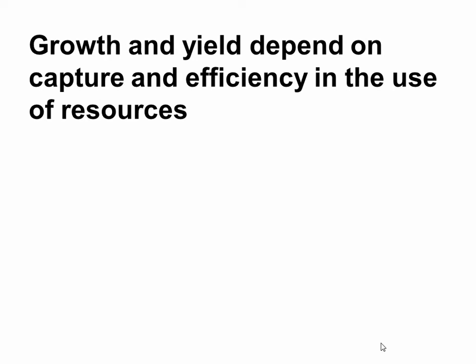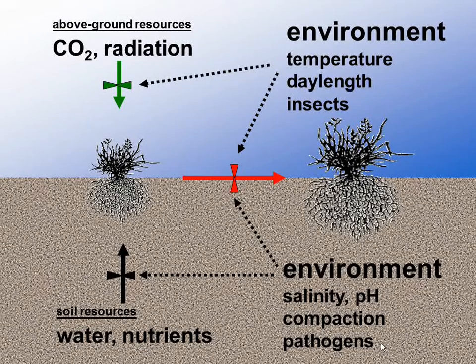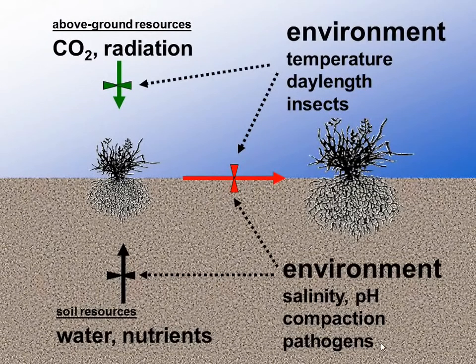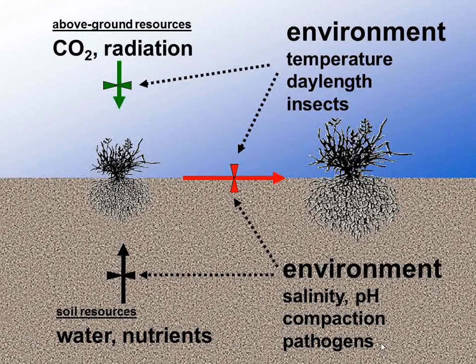The growth of crops depends on the ability of the crop to capture resources and use them with a certain efficiency to produce biomass. The resources are water and nutrients — that's probably the focus of most research and management. But there's also CO2 and radiation, which we take for granted because we don't pay for them. Water and nutrients can be stored in the soil, so today's rainfall could be used next week. But radiation lost today is gone forever — so there's an opportunity cost. Other factors like temperature, daylight, insects, and soil constraints modulate the crop's ability to capture those resources.